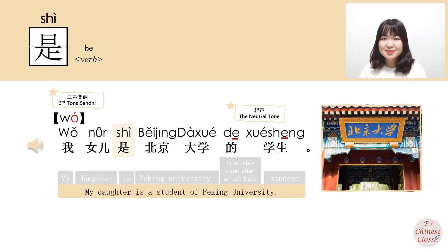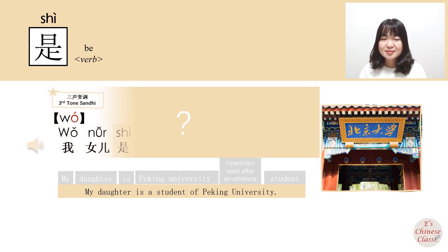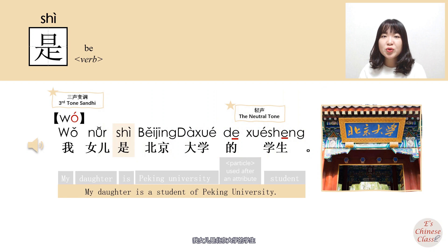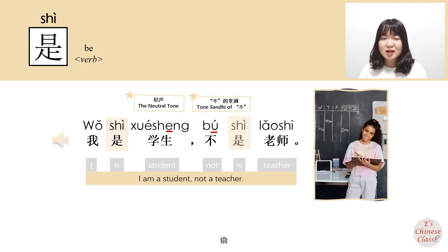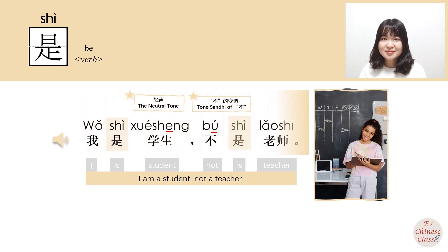我女儿是北京大学的学生。(My daughter is a student at Peking University.) 我是学生，不是老师。(I am a student, not a teacher.)